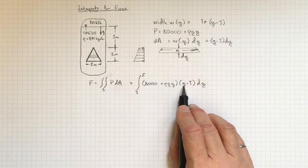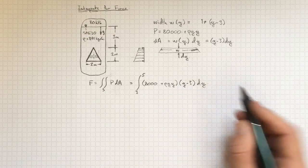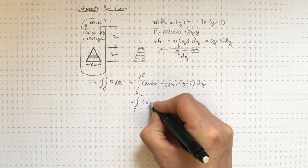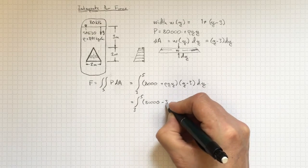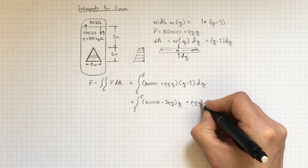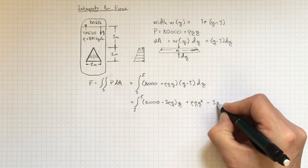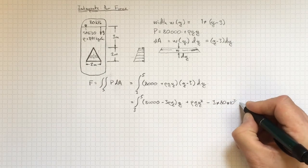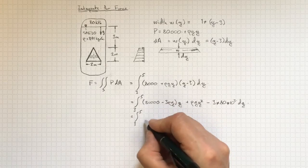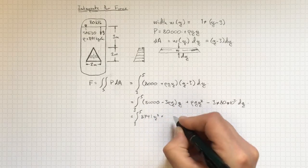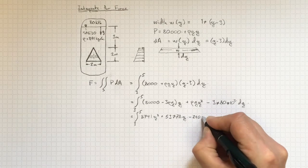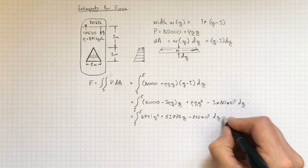Now I can multiply that through, I'm going to wind up with a quadratic in y. And if I do that, I'll get the integral from y equal three to y equal five of 80,000 minus three rho g times y plus rho g y squared minus three times 80 times 10 to the three dy. Or if I collect all the terms together, still integral from three to five: 8741 y squared plus 53,778 times y minus 240 times 10 to the three, all dy. So there's my quadratic.